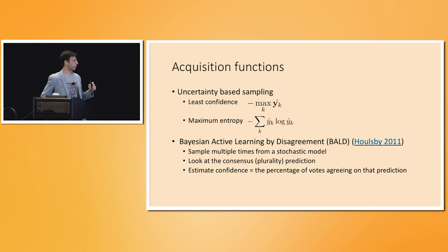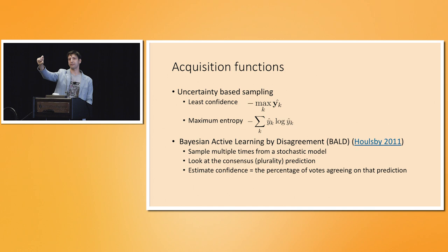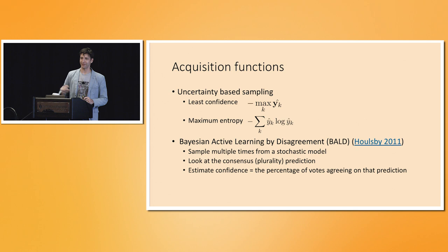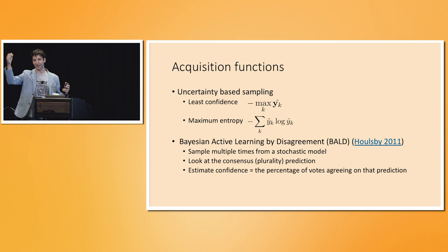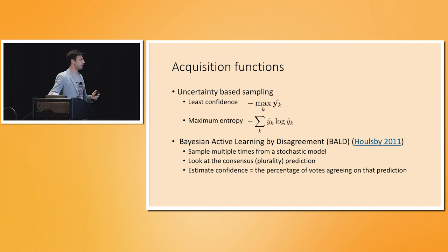There are many different acquisition functions. One classical approach is least confidence: look at your predicted distribution over classes, find the example where the probability assigned to the most likely class is lowest — that's where the model is most uncertain. The intuition of uncertainty-based sampling is: if I'm already 100% sure it's a cat, I shouldn't waste my annotation budget on that example. I should focus on examples where the classifier isn't sure.